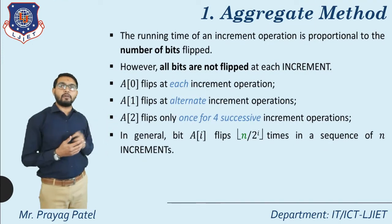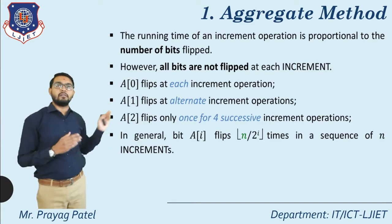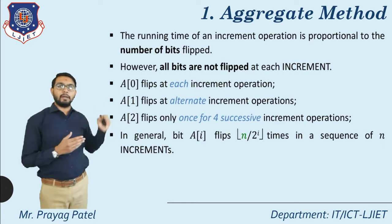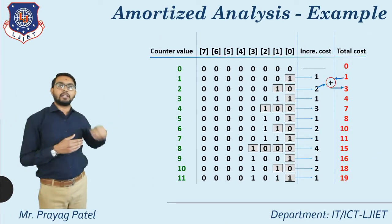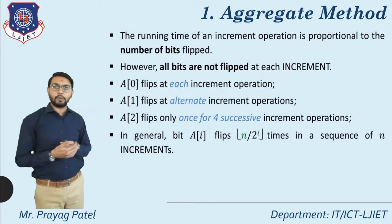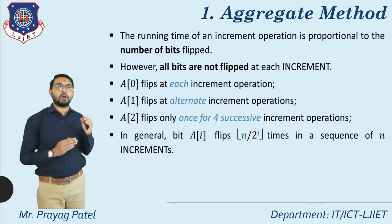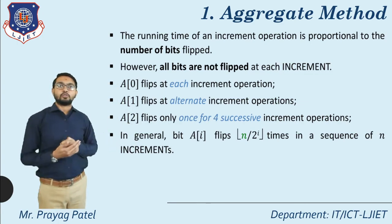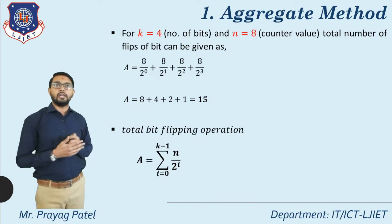A[1] flips at every alternative increment operation. A[2] flips only once for every 4 successive increment operations. In general, bit A[i] flips n divided by 2^i times in a sequence of n increment operations. So for performing n operations, the bits flip according to this pattern.